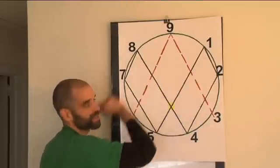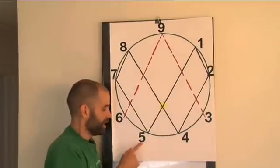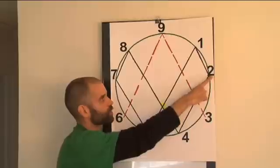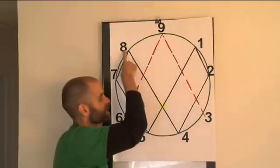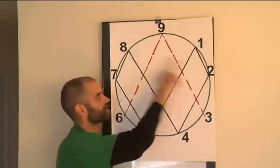2 plus 6 is 8. 8 plus 6 is 14, which is 5. 14 plus 6 is 20, which is 2. 26, which is 8. On and on. Backwards, 6. Forwards, 3.